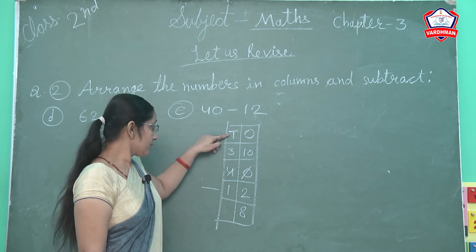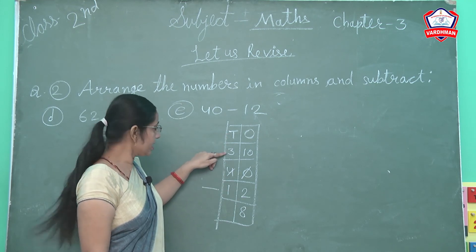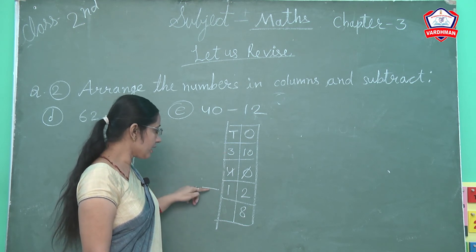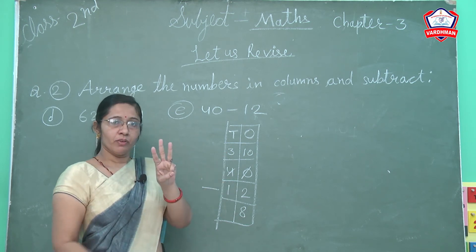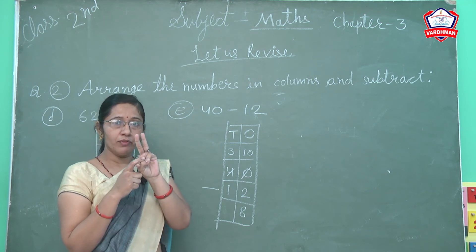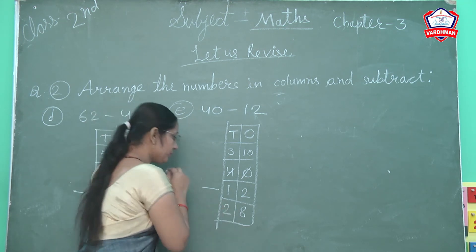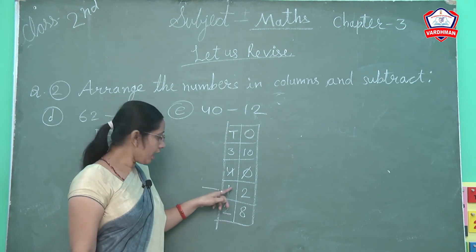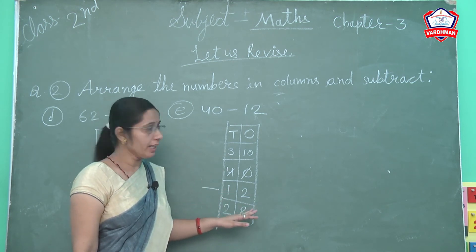Next: tens column. Tens mein first digit is 3 — new digit is 3. 3 mein se less karo ge 1. 3 mein se 1 less, how many left? 2. So write 2. 40 minus 12, the answer is 28.